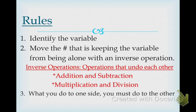The very first thing that you want to do is identify the variable. What is a variable? A letter that represents a number — so it's any letter of the alphabet. Then, number two, we want to move the number that's keeping the variable from being alone with an inverse operation. Basically, all that's saying is get the variable by itself, and you have to do it with an inverse operation. What does inverse mean? Opposite.